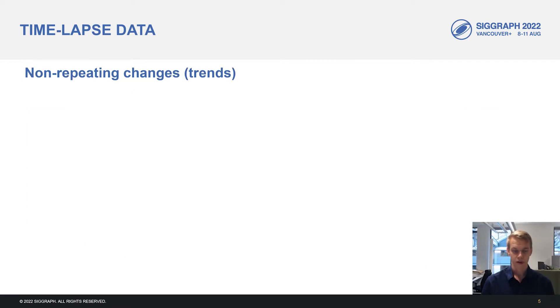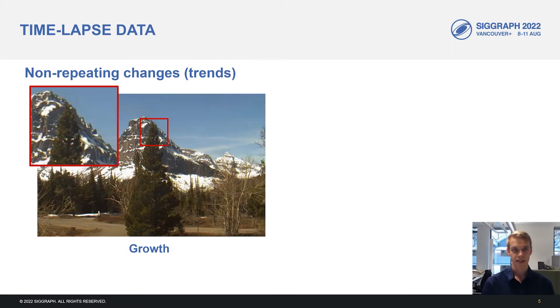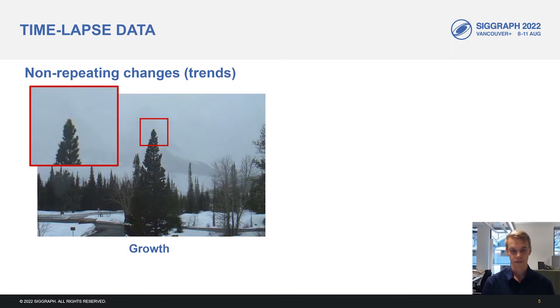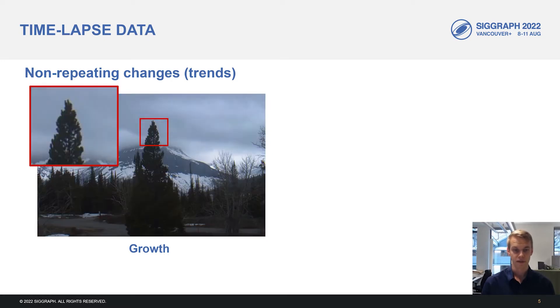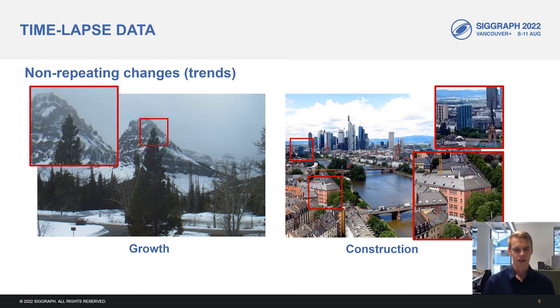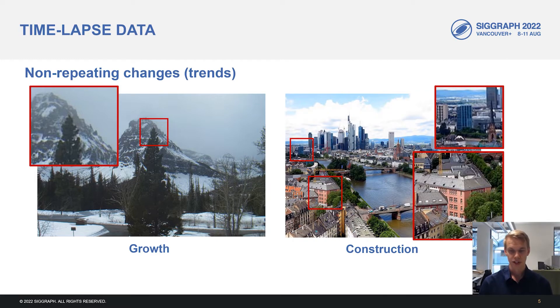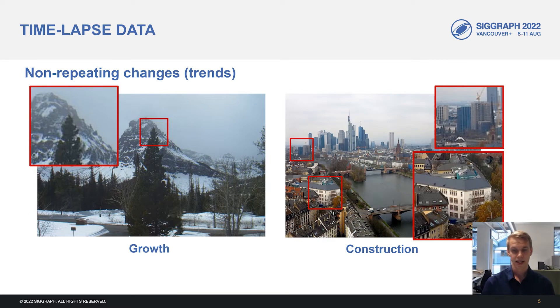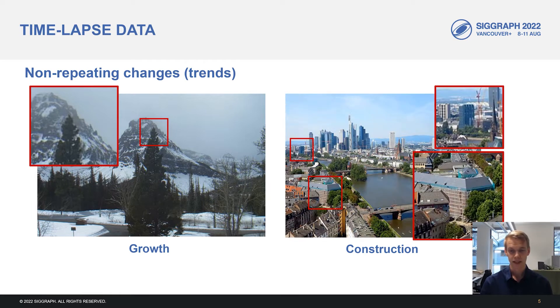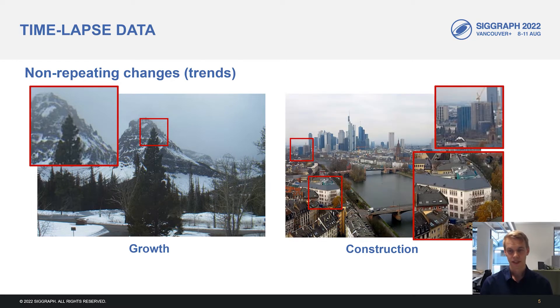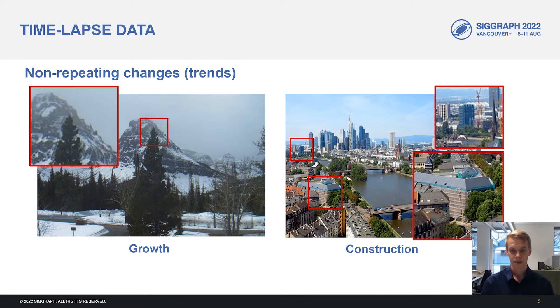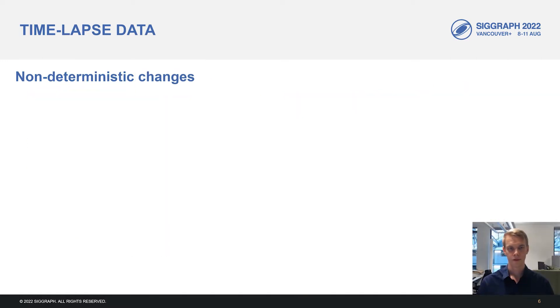We also have non-repeating changes that still depend on time, so-called trends. We have continuous trends like this gradual growth of the tree on the left over several years. As well as discontinuous change. For example, the construction or renovation of buildings. In the bottom inset, we see a red building being painted white. And on the top, we see a new building being constructed in the background.